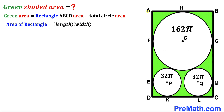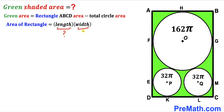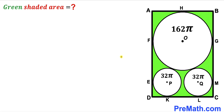For rectangle ABCD, side AD is the length and side AB is the width. Our task is to calculate both the length and the width. We'll begin by calculating the radius of the big circle and likewise the radii of the two smaller circles.